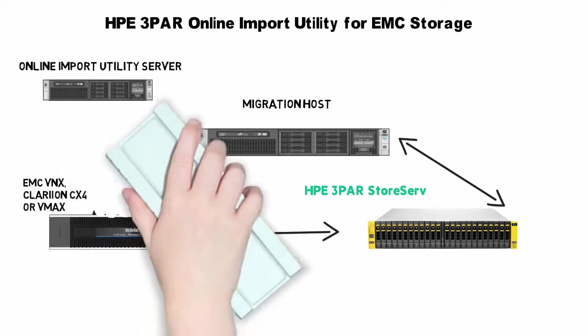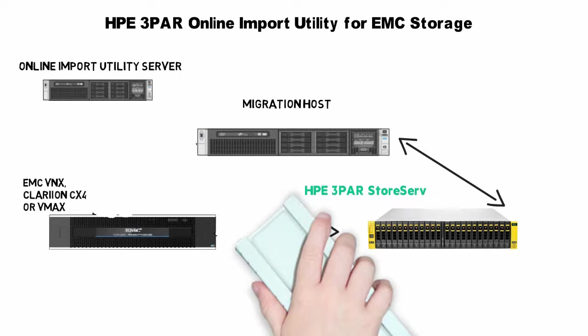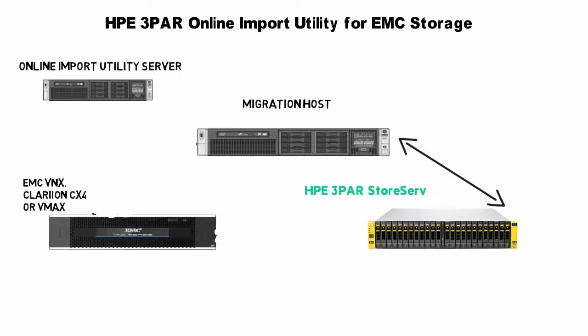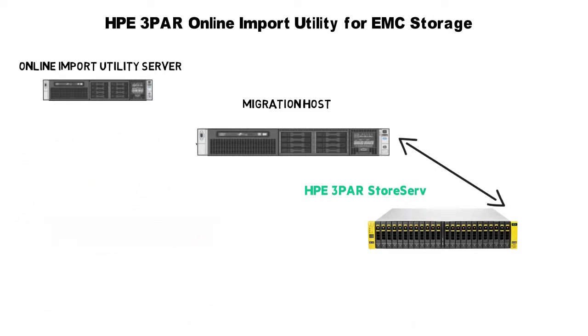During the migration, we'll keep the HPE 3PAR peer ports connected to the EMC array. Consistency is kept with the LUNs on the EMC array via those 3PAR peer ports. Once the migration is complete, we can remove the peer port connection between the EMC and 3PAR arrays. The 3PAR will remain zoned to the migration host, and — this is my favorite part — the EMC array can be removed from the equation.